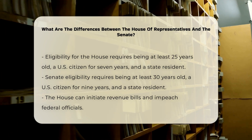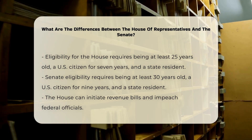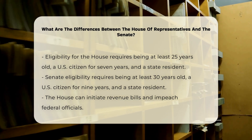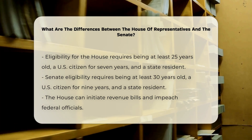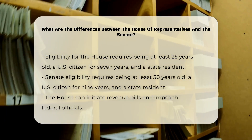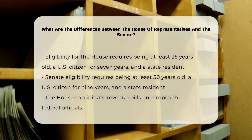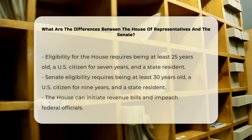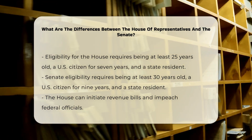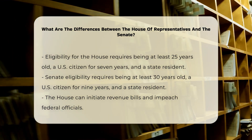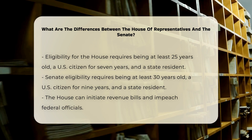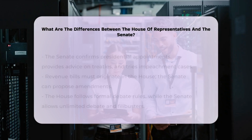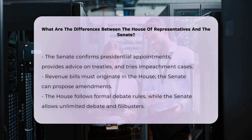Powers and responsibilities. The House has the exclusive power to initiate revenue bills and to impeach federal officials. It also has the power to elect the president in the case of an Electoral College tie. The Senate, however, has the sole power to confirm presidential appointments, provide advice and consent on treaties, and try impeachment cases referred by the House.